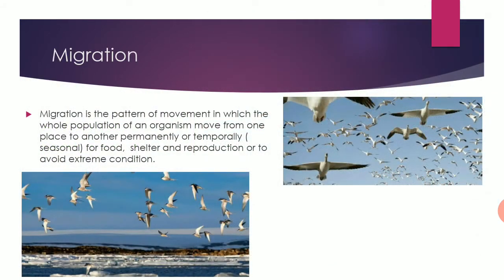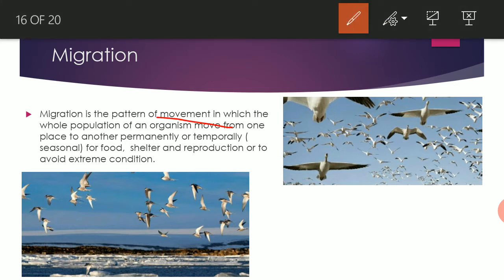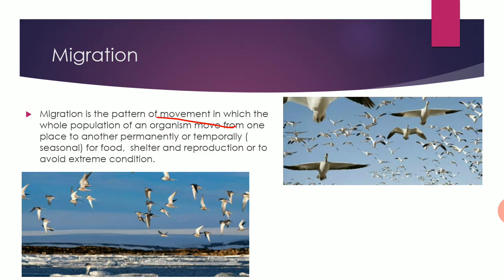The next adaptive strategy of some polar creatures is migration. Migration is a pattern of movement in which the whole population of a living organism moves from one place to another — it may be temporal or permanent. The main aims are to collect food, find shelter, reproduce, and avoid extreme conditions. This type of migration is very common in birds like the Siberian crane and Arctic tern. Apart from birds, many fishes, insects, and mammals also show migration.